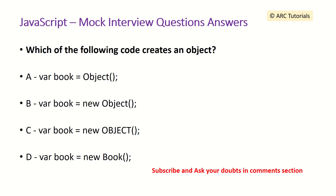Which of the following code creates an object? Take a look at the various options given here and pick your answer. The correct answer is option B — you define the variable name equal to the new keyword and Object. Pay attention to the casing as well.